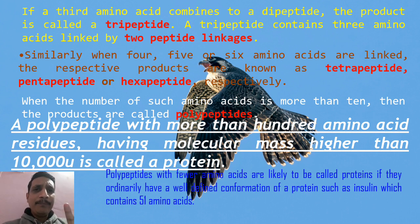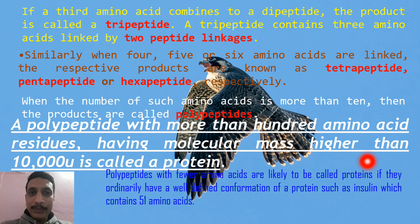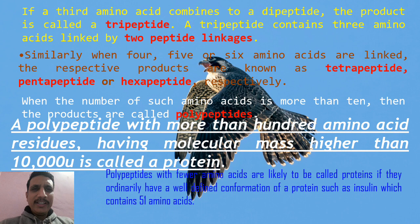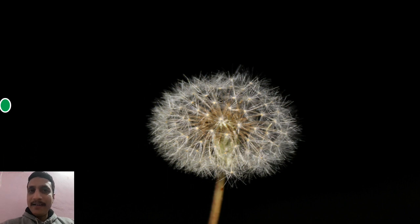One example is insulin, which contains only 51 amino acids. Insulin is a hormone that contains only 51 amino acids. So even in this exceptional case, we call it a protein. In general, all proteins contain more than 100 amino acid residues. Protein is a polypeptide containing more than 100 amino acid residues joined together by peptide linkages, having a high molecular mass.